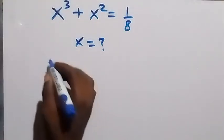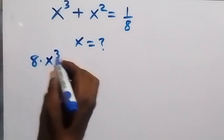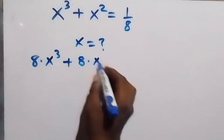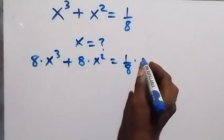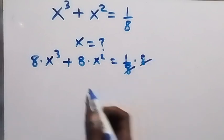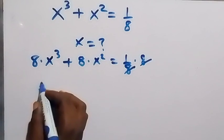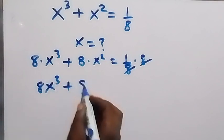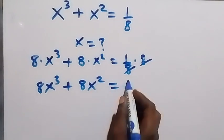When we multiply by 8 we have 8 times x^k plus 8 times x squared, then equals to 1 over 8 also times 8. This 8 cancels out and we remain with 1. So we can write this as 8x^k plus 8x squared equals to 1.